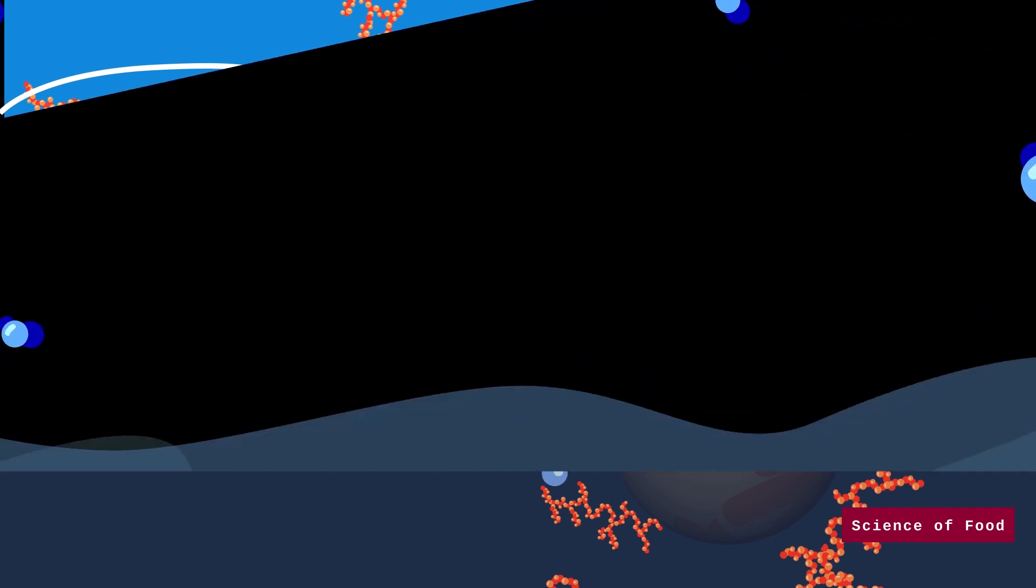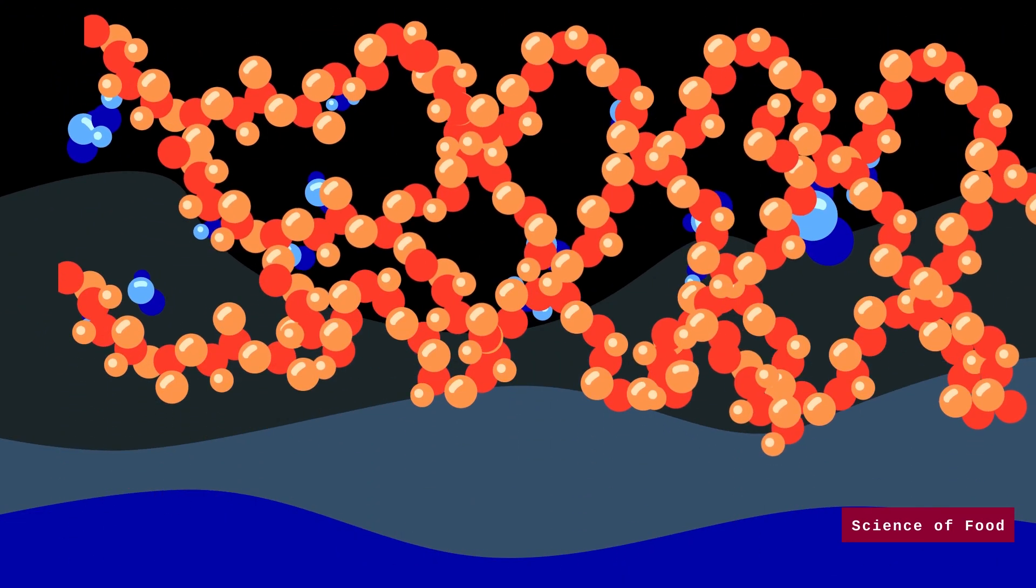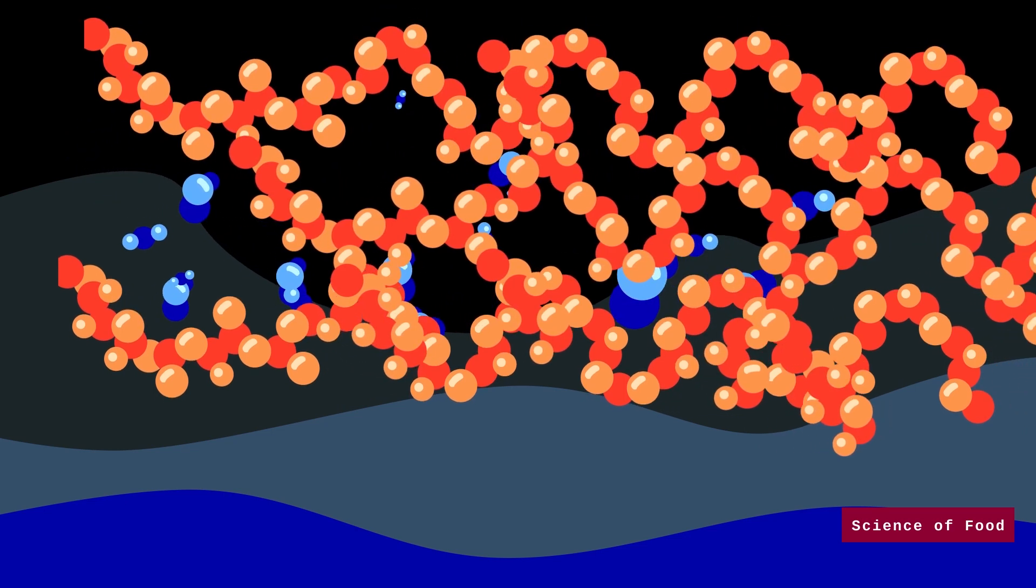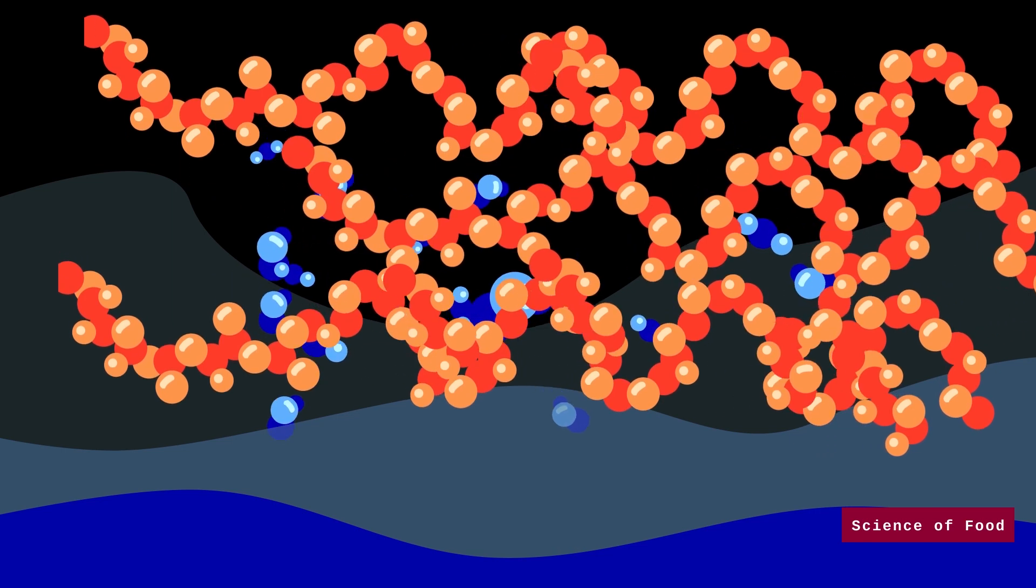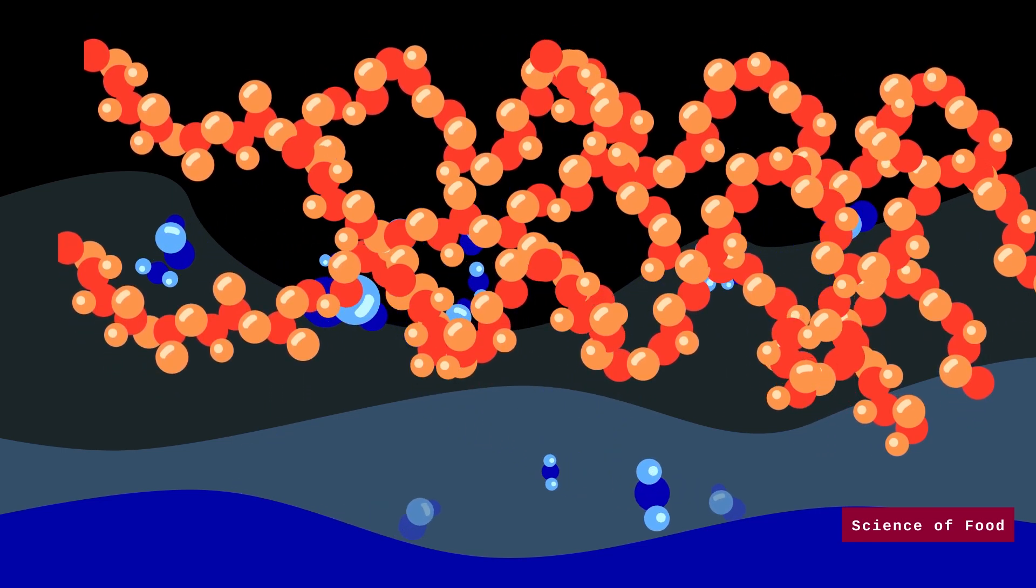When in the solution, these starch chains bind with one another, trapping and immobilizing water, forming a gel. As the solution cools down, the starch network moves closer and closer to each other, eventually returning to its crystallized state.